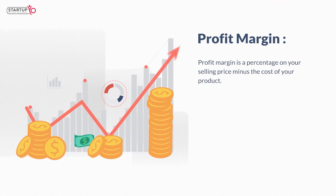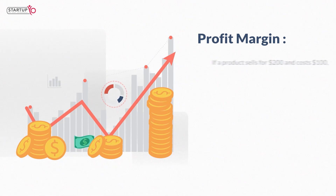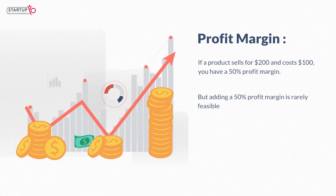Profit margin is the percentage of your selling price minus the cost of your product. If a product sells for $200 and costs $100, you have a 50% profit margin. However, adding a 50% profit margin is rarely feasible, so here's the formula you'll use to figure your profit margin for other markups.